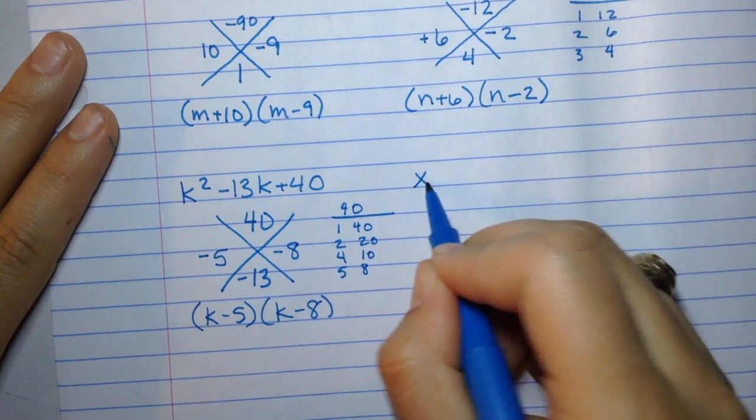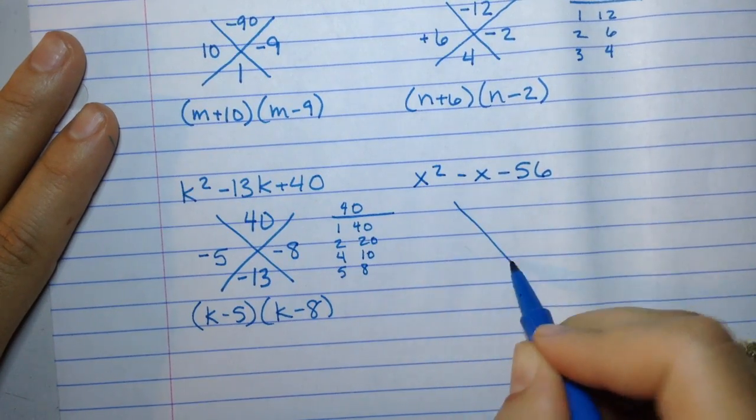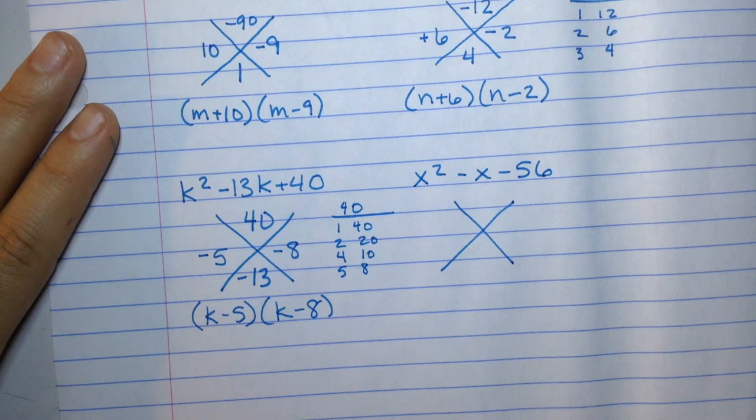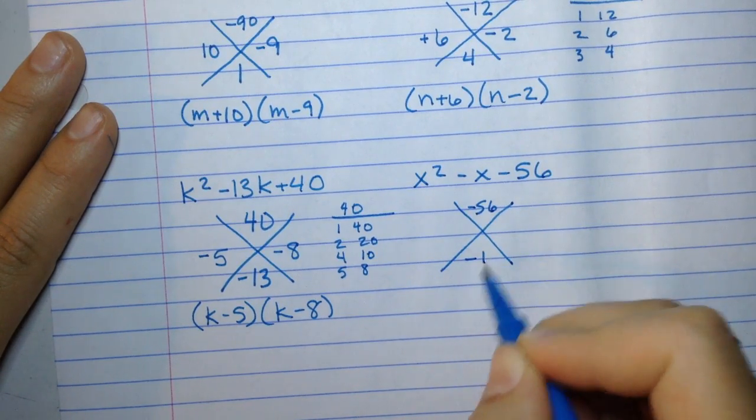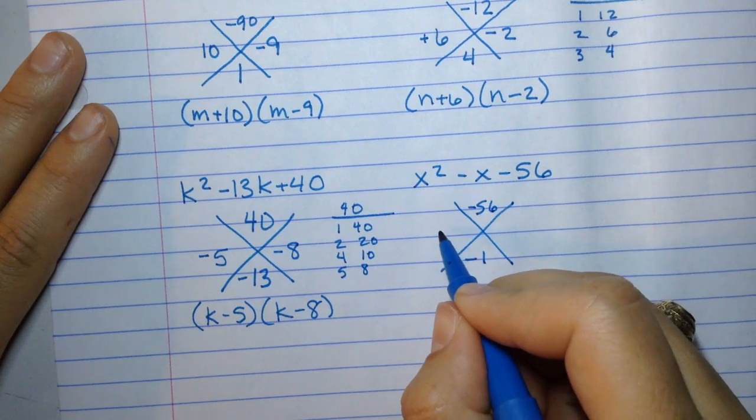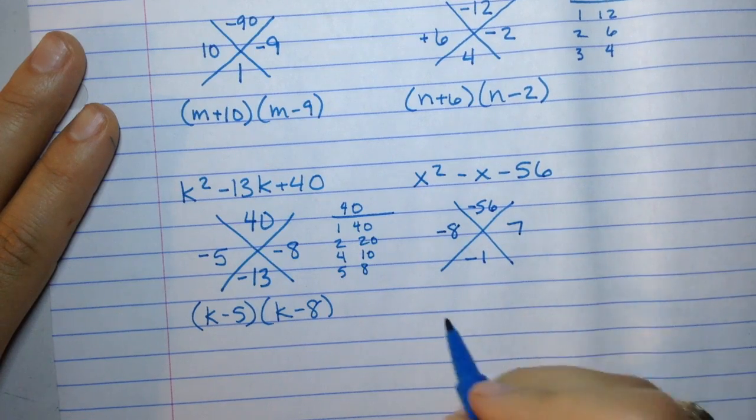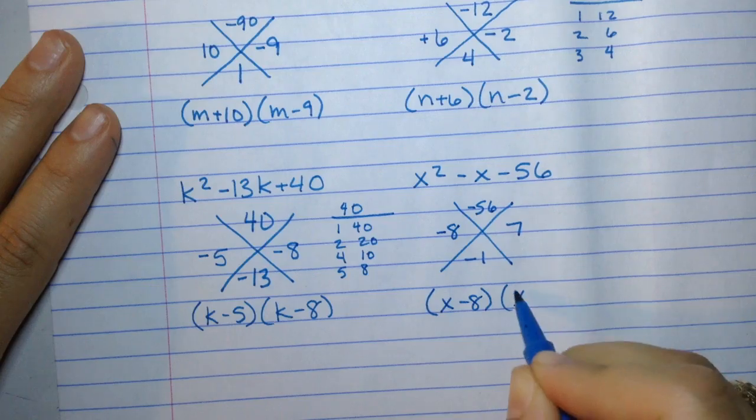Last but not least, this is x squared minus x minus 56. Negative 56 in the top, negative 1 in the bottom. Things that multiply to 56 and add to 1, the only combination here is negative 8 and positive 7. So this factors to (x minus 8)(x plus 7).